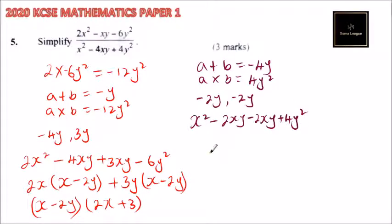So here we can now factor and say this is x. We factor out x, we will be left with x minus 2y. And here we factor out minus 2y, we will be left with x minus 2y.